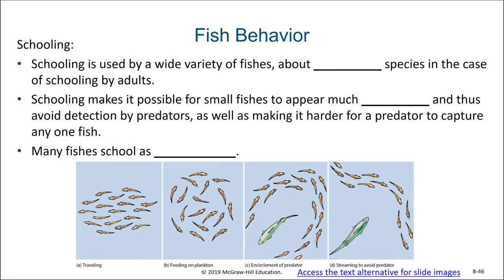Schooling is a behavior seen in many types of fish, but not all of them. There are about 4,000 species which will school as adults, although many more fish school as juveniles. Schooling makes it possible for small fish to appear much larger, thus avoiding detection by predators as well as making it harder for a predator to capture any one fish. Fish will often have different patterns as they are swimming in a school, whether they're traveling in the same direction, feeding on plankton, encircling a predator, or avoiding a predator.